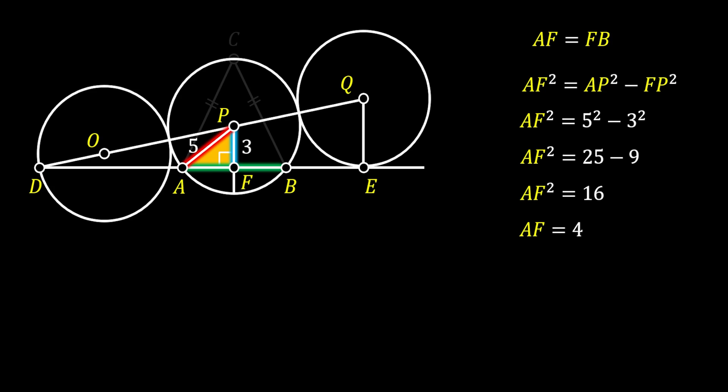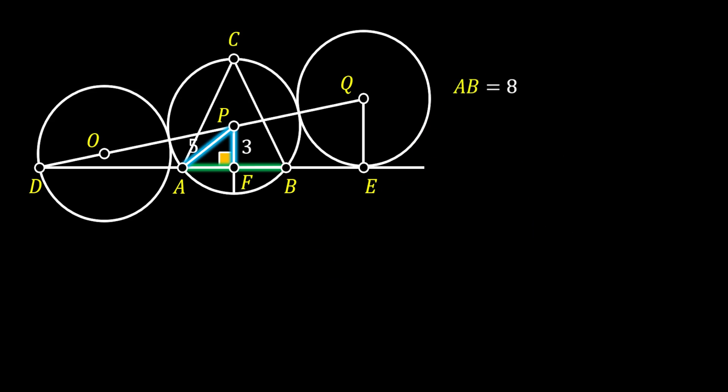Alright, before we continue, if you enjoyed the video so far, I will encourage you to leave a like or subscribe to the channel if you already haven't. Now, we can easily calculate our chord AB, which is equal to AF plus FB. Since AF and FB are equal, this means that this chord is equal to 4 plus 4, which means that AB must be equal to 8.